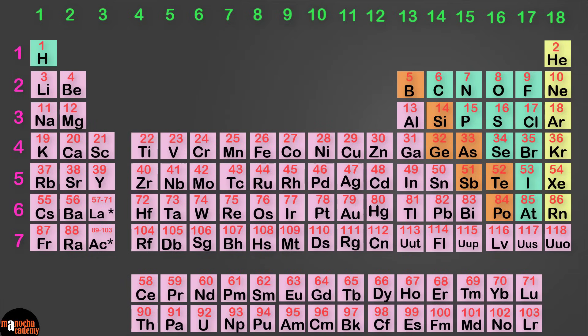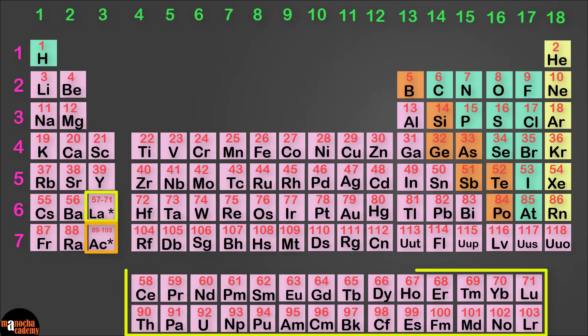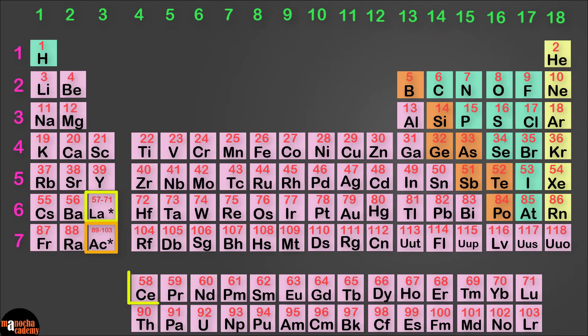Now if you look at period 6 and 7, you'll notice something interesting - elements with atomic number 57 to 71 and 89 to 103 are put separately below the periodic table. This is done to compact the periodic table.